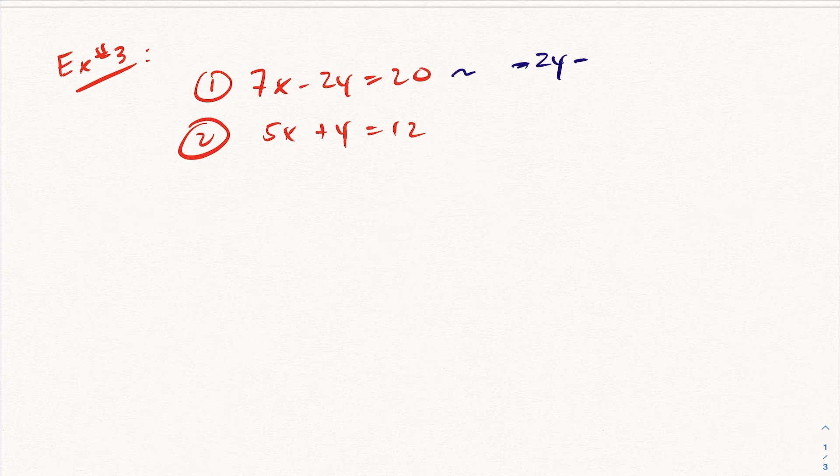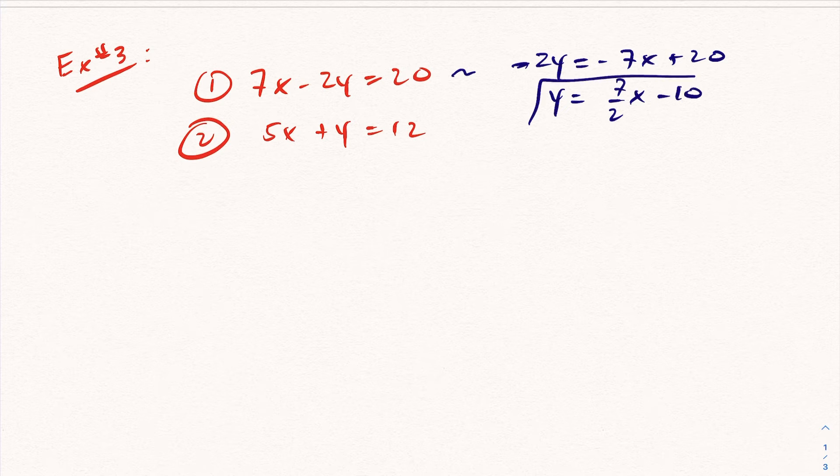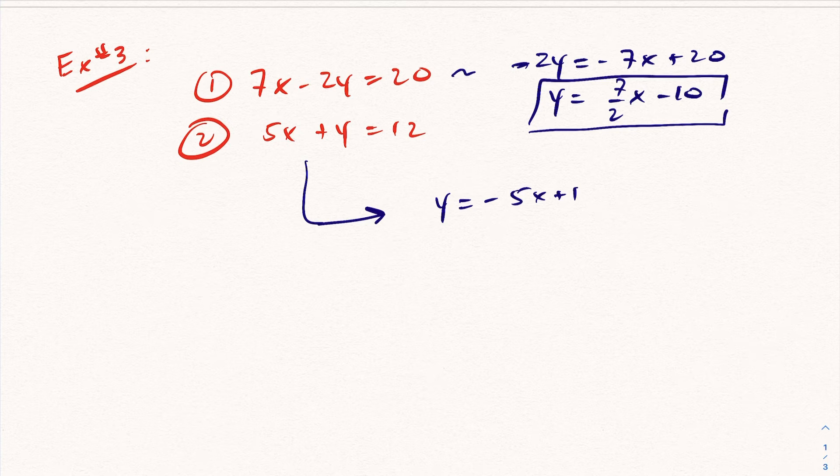So I'm going to try to isolate for y. Divide across by negative two. And I've got my one equation. Likewise here, I'm going to try to isolate for y. And we are in slope intercept form.